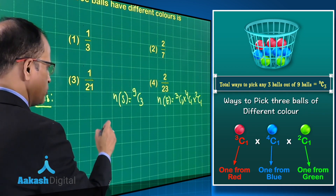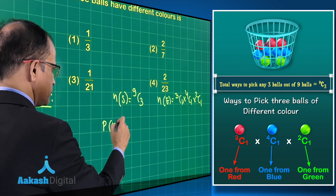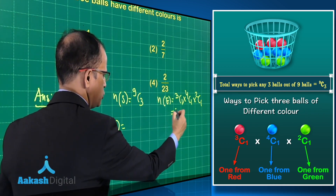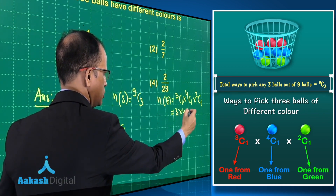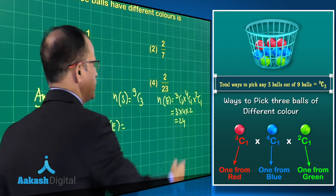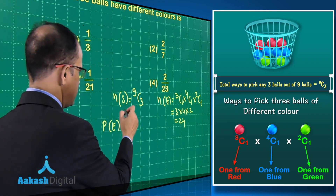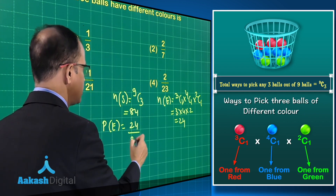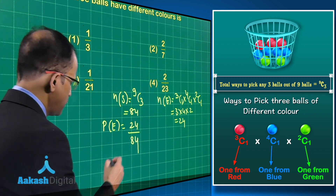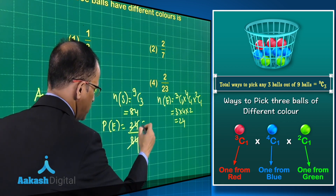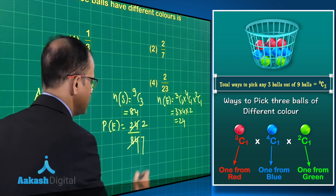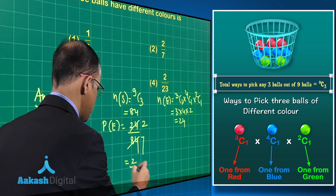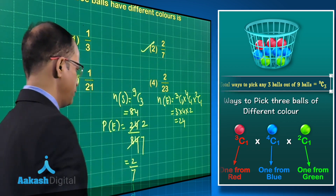The probability of event E comes out to be 3 × 4 × 2 = 24, and 9C3 = 84. So 24 divided by 84 simplifies — dividing both by 12 — to give us 2 upon 7 as the final answer.